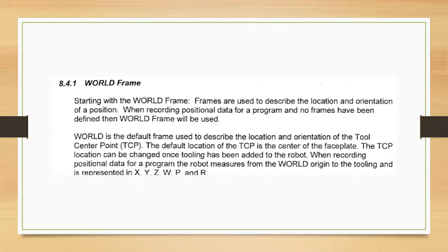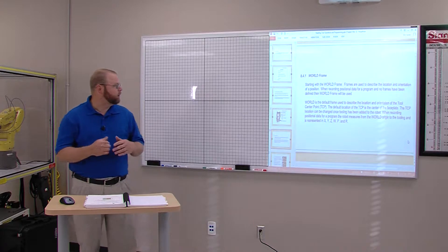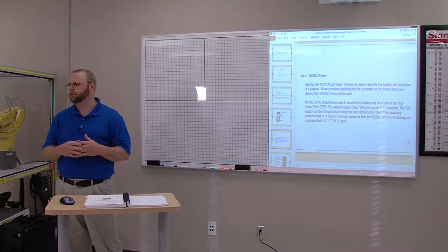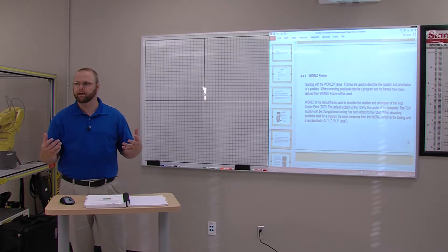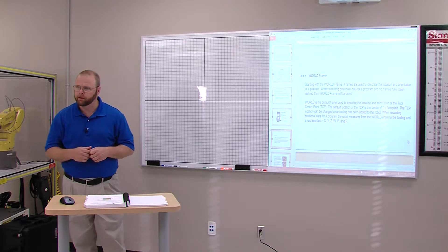This is the most important frame in all robotics — the world frame. Frames are used to describe the location, orientation, or position of the robot. When recording positional data for a program and no frames have been defined, the world frame will be used. Every frame we establish on this robot will come from this point. This is the point in space where the robot knows where it's at — its home position — and it cannot be altered by us. It comes from the manufacturer, and all other frames we establish will be in reference to this frame.